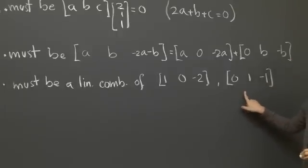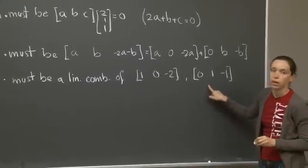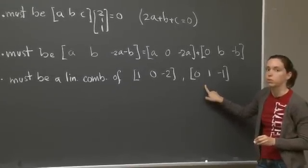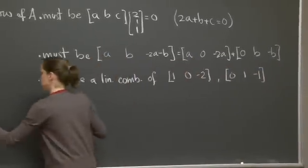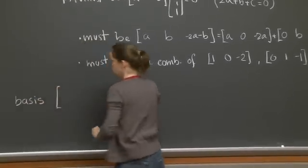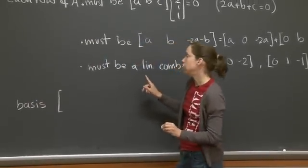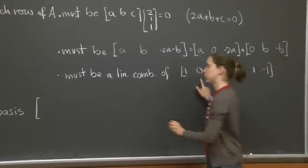So this is what each row of A must satisfy. So we can now put everything together into what a basis for the vector space has to be. A basis will be, well, it's 2 by 3 matrix, and each row must be a linear combination of these two vectors. So let's write that.